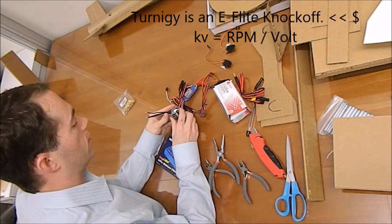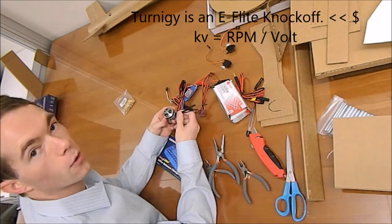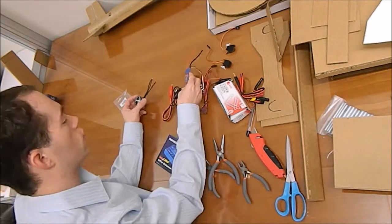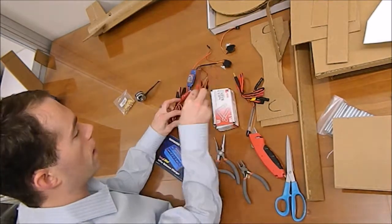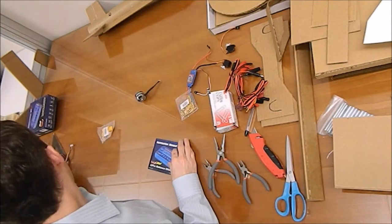What I've got is a Turnigy Park 480 1320 KV Outrunner motor. I've got a 30 amp speed controller, various wires, this and that. I've got my connectors here, two batteries.